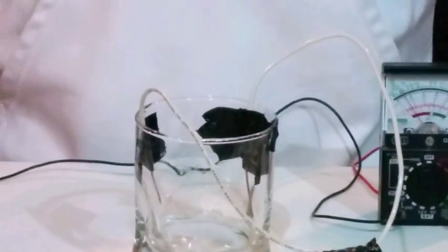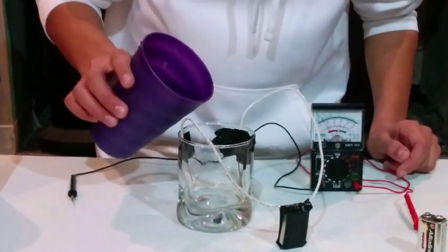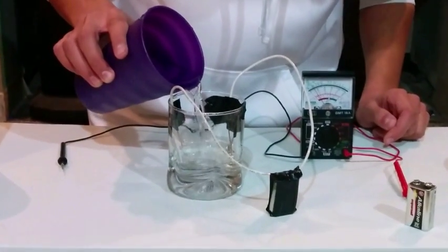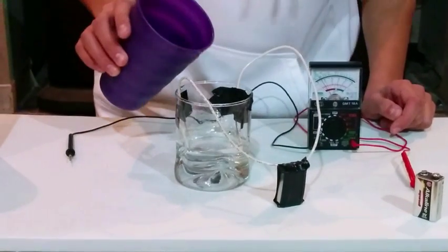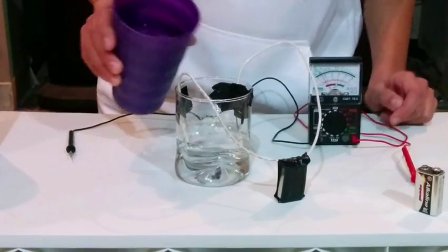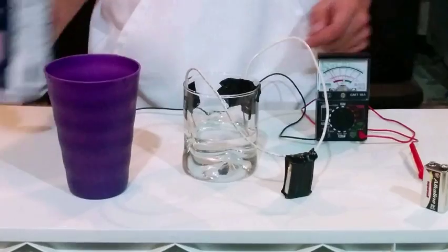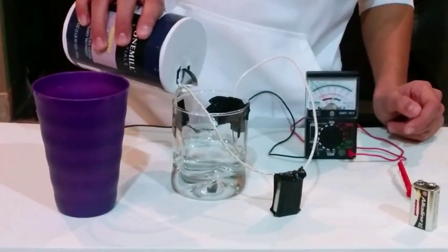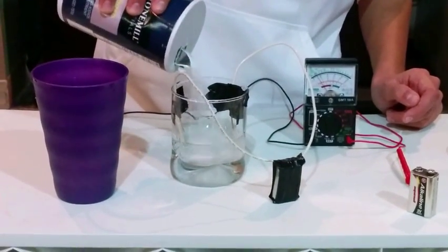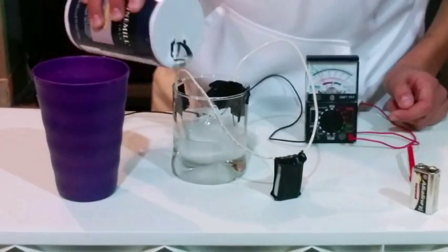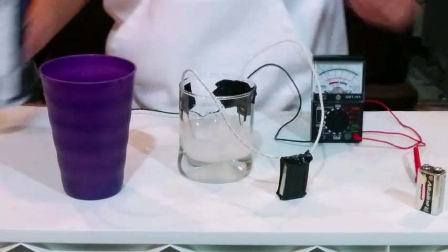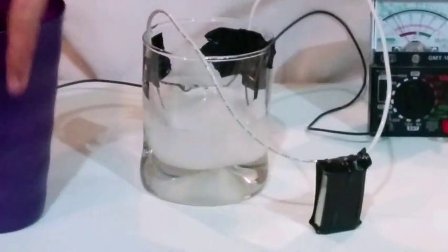So we're going to pour the water into the glass so that both copper wires are touching the water, and then we're going to add the table salt and stir it around to get it to dissolve.